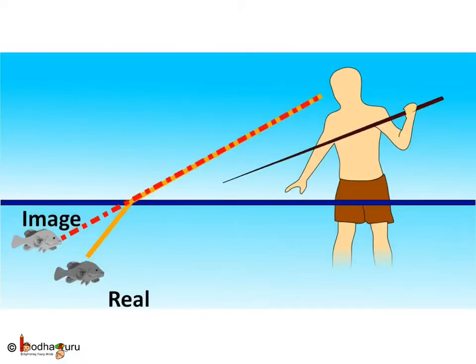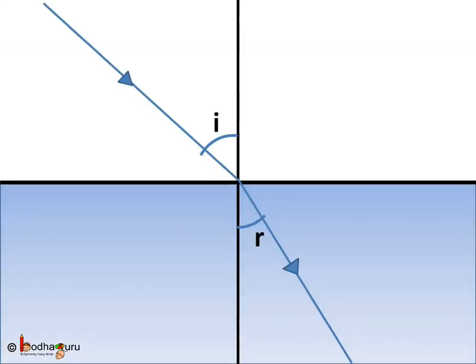The refraction of light follows certain rules. Let i be the angle made by the incident ray, that is the light coming from the object with the normal. We call this angle of incidence.